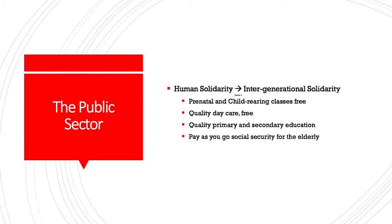What about the public sector under economic democracy — education, health care, and child care? Schweikert relies on the notion of solidarity built up in worker-owned cooperatives, leading to intergenerational solidarity. This includes free parenting and child-rearing classes, quality day care, quality primary and secondary education, and a pay-as-you-go social security for the elderly in that society.